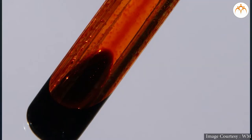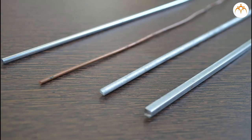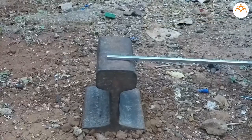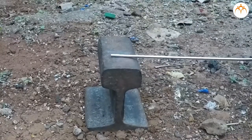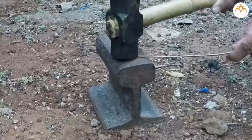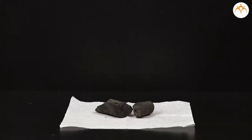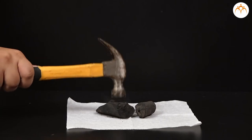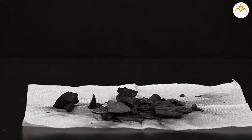Sulphur is yellow. Bromine is brown. Students, I have these objects made up of different metals. I will hit these one by one — what do you observe? Metals are generally hard, and the degree of their hardness may vary. Now let's take this coal — I will hit on it with this hammer. What do you observe? It breaks because it's brittle.